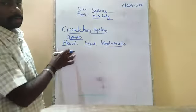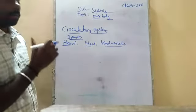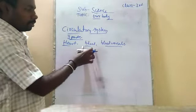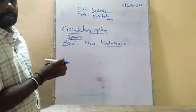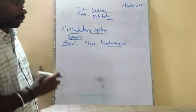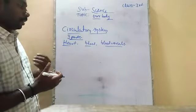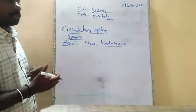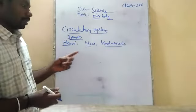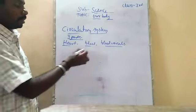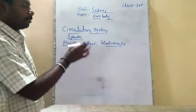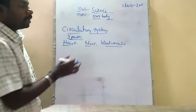The heart is the organ which pumps the blood throughout our body. The blood circulates throughout the body and supplies all the nutrients to our body cells. It carries the oxygen, the glucose, and the waste materials from the body. It is responsible for the nourishment of the body cells.